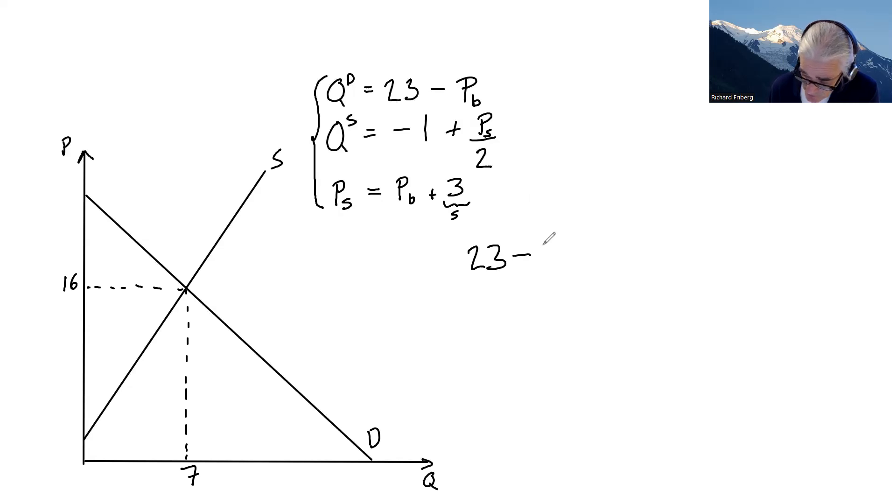23 minus P_b equals, just taking quantity demanded from here, and quantity supplied equals minus 1 plus, now we're substituting in. Instead of using P_s we substitute in what we know about P_s. That's equal to P_b plus 3 divided by 2, or multiplied by one half.